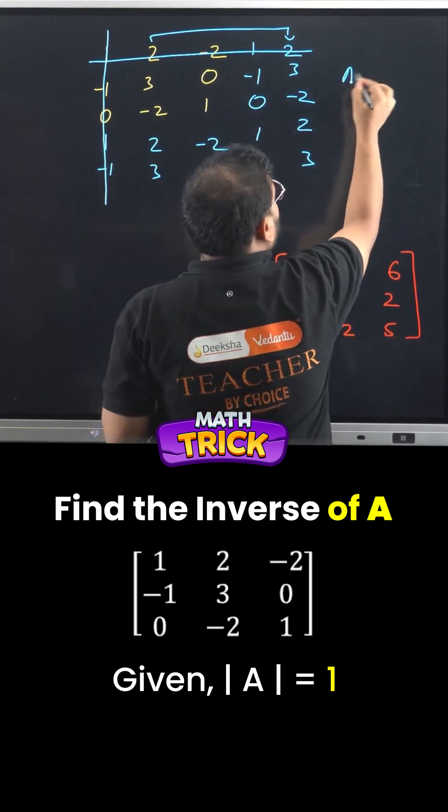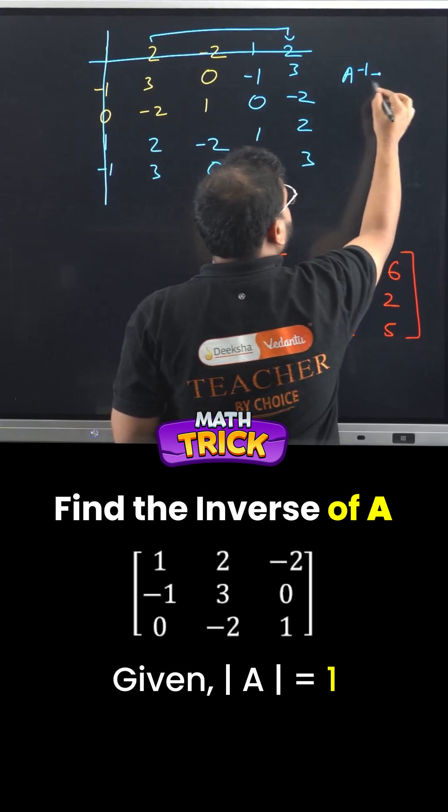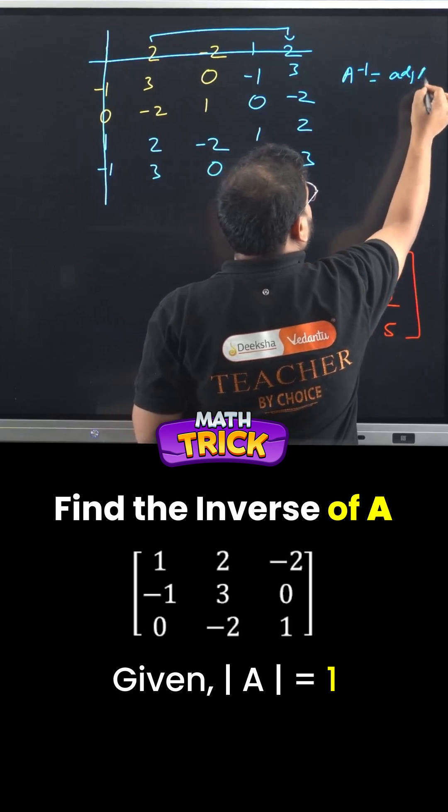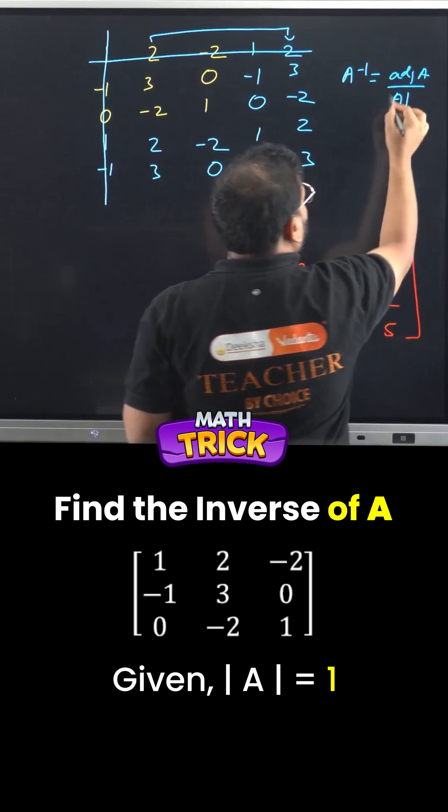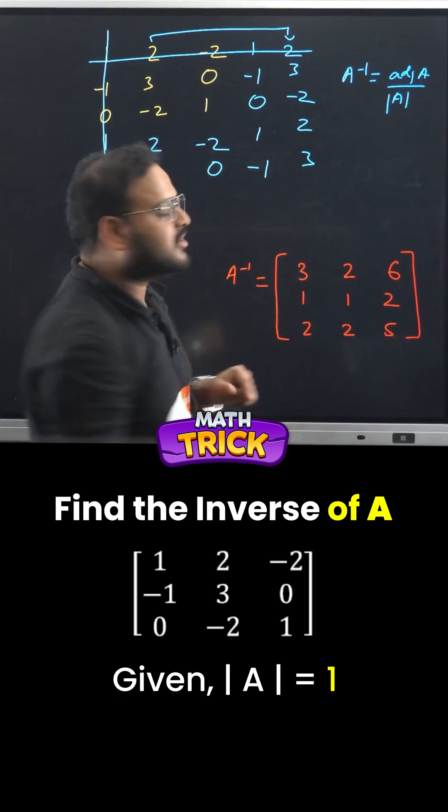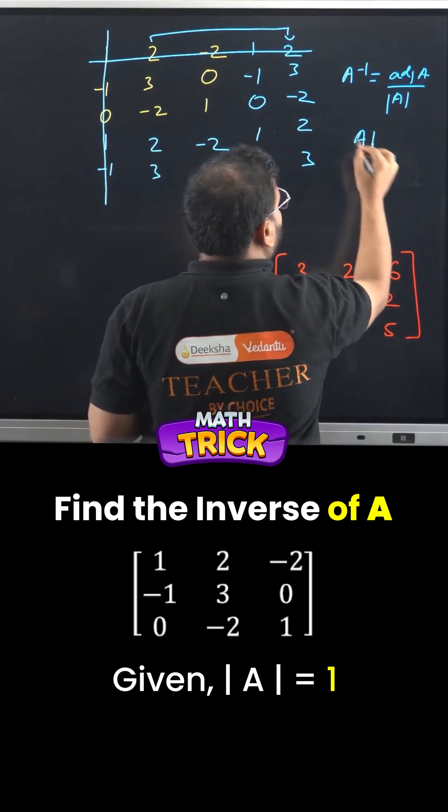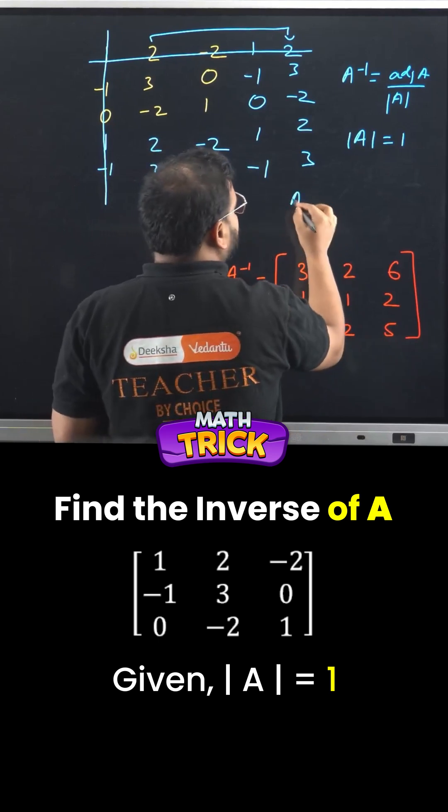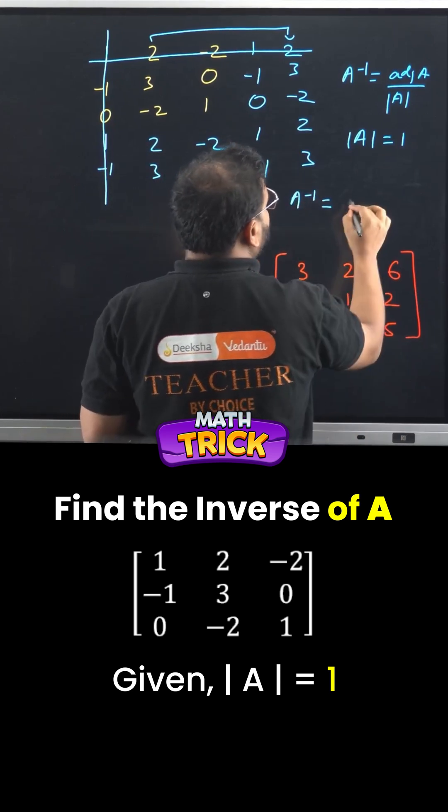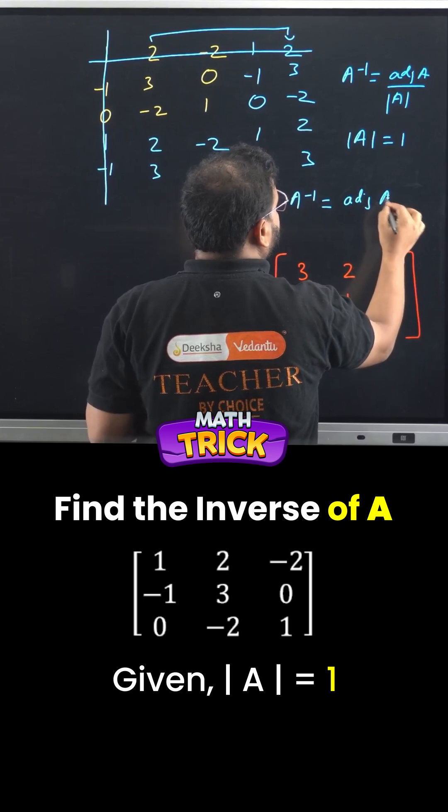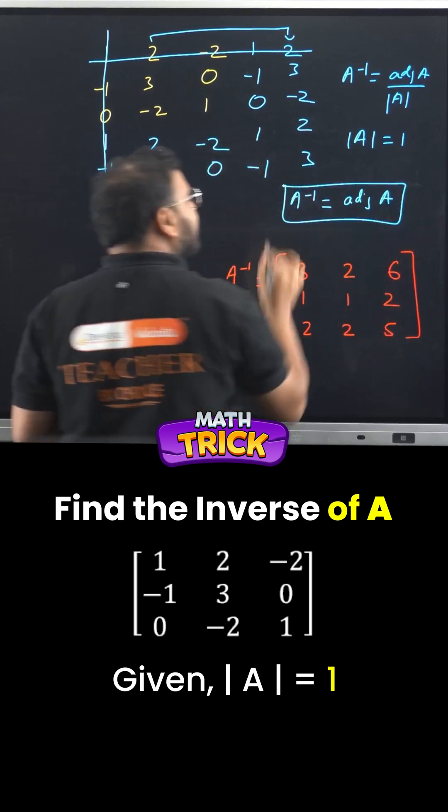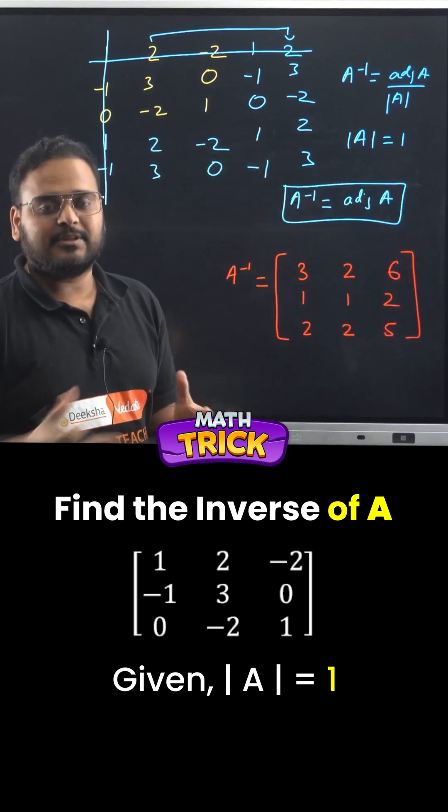Let's find the formula that we have for A inverse given by adjoint of A divided by determinant of A. Determinant of A in this question is simply given as 1, simply given as 1. It means my A inverse is going to be equal to adjoint of A. And this technique is to find the adjoint directly without finding cofactors.